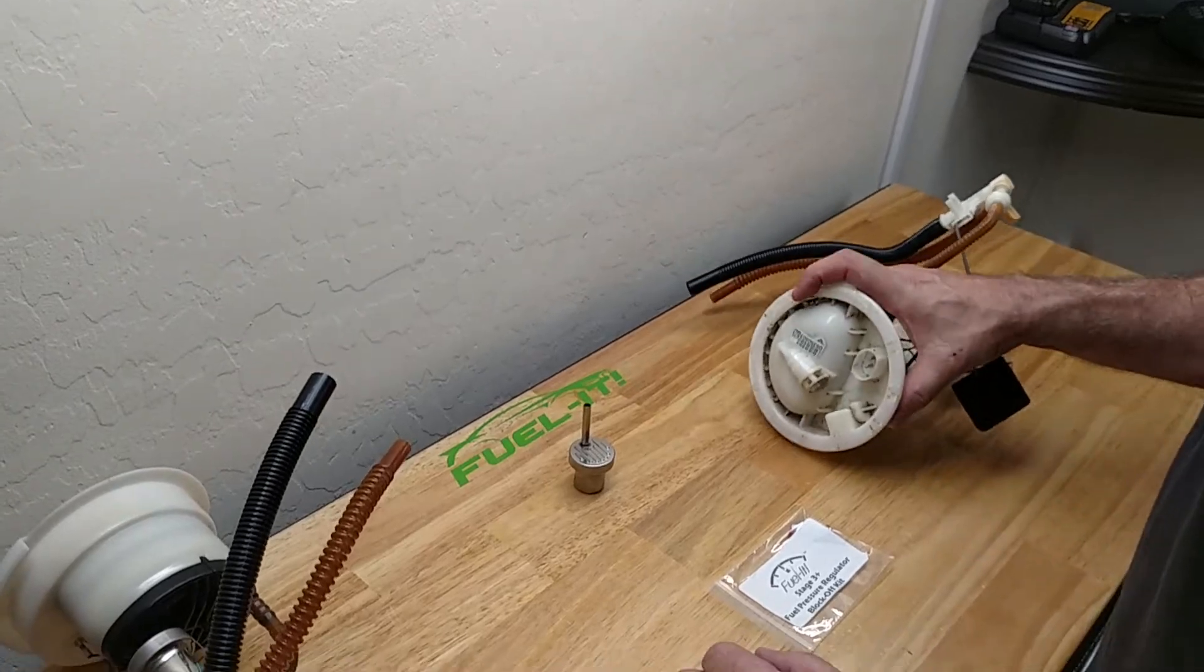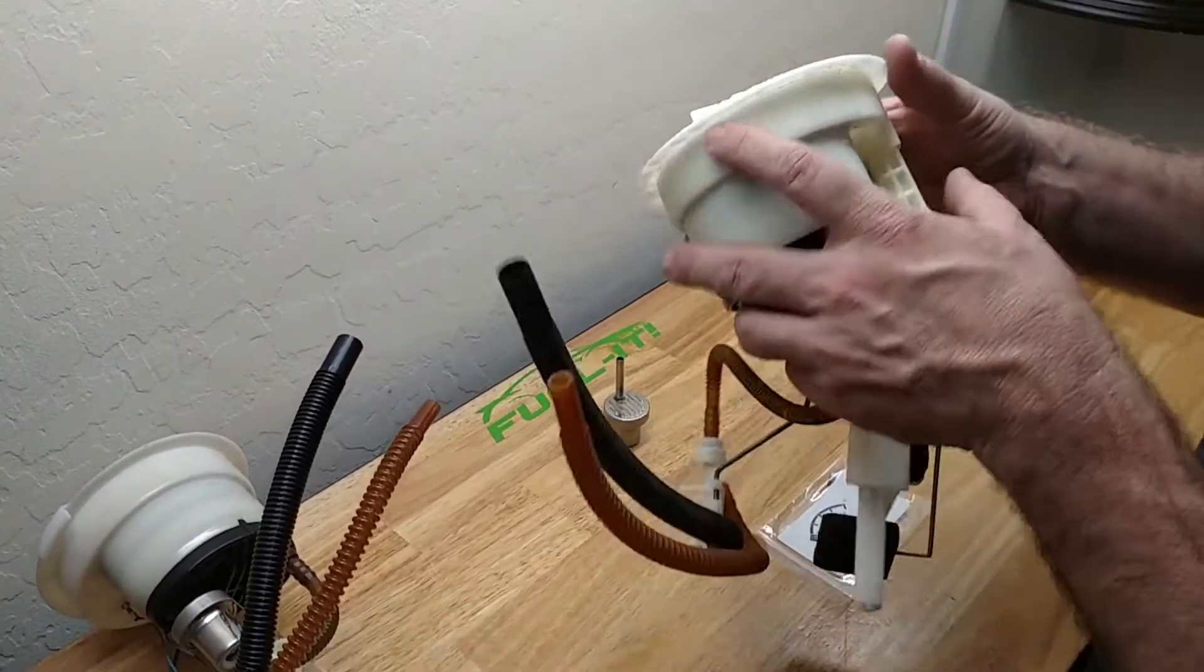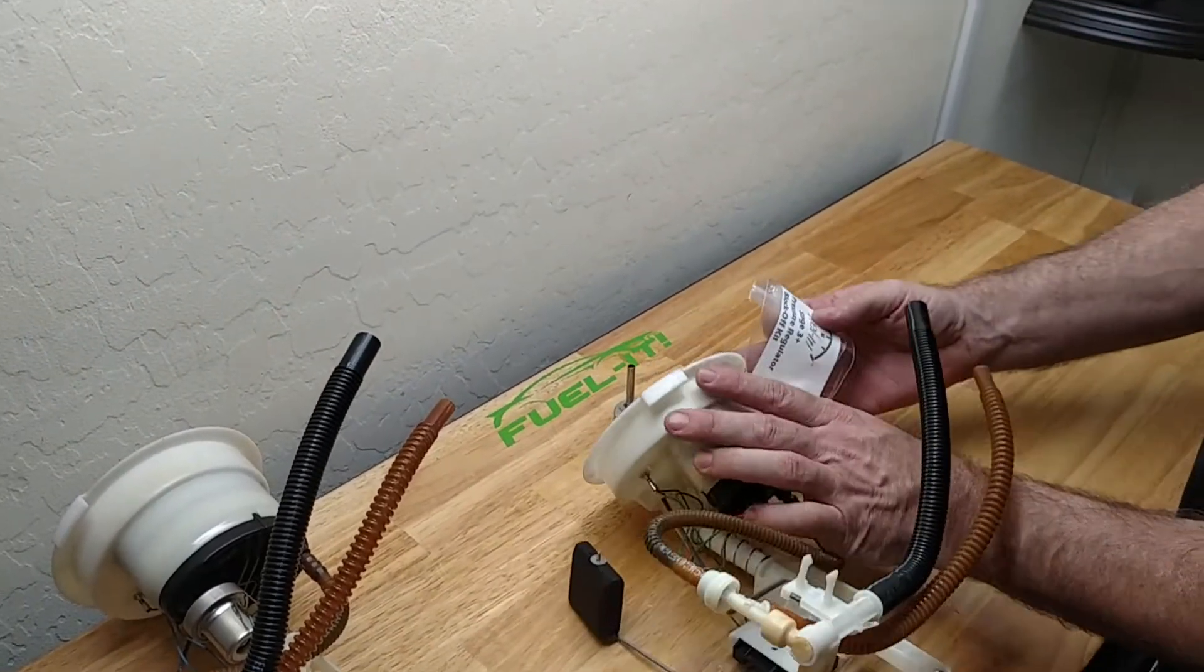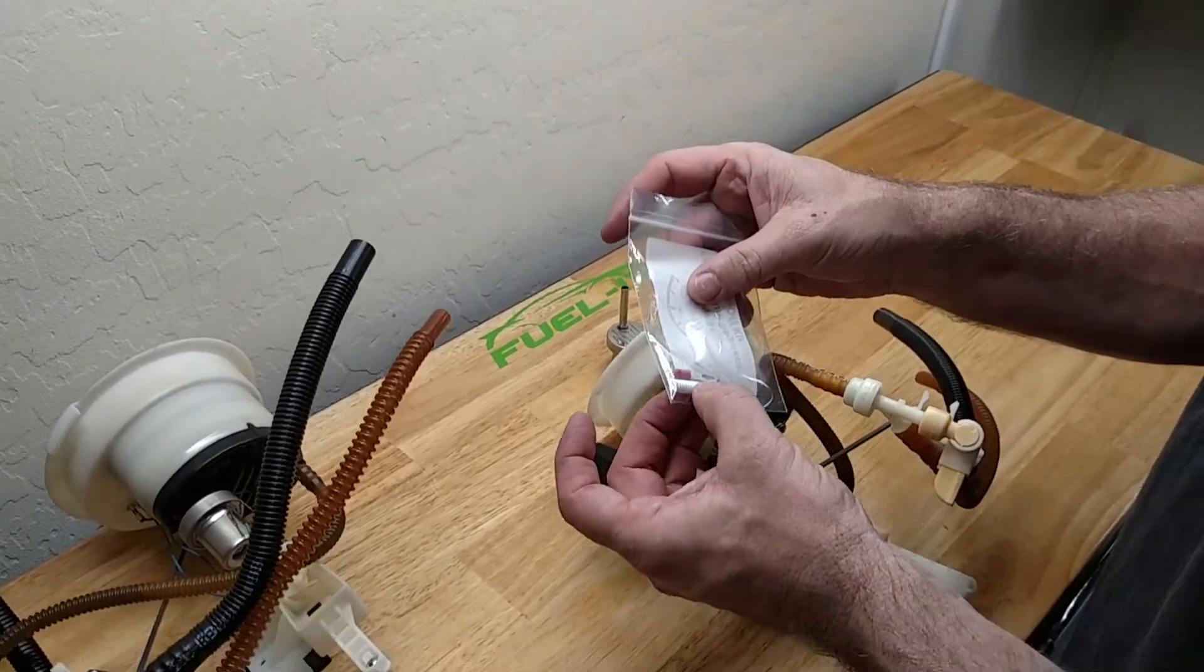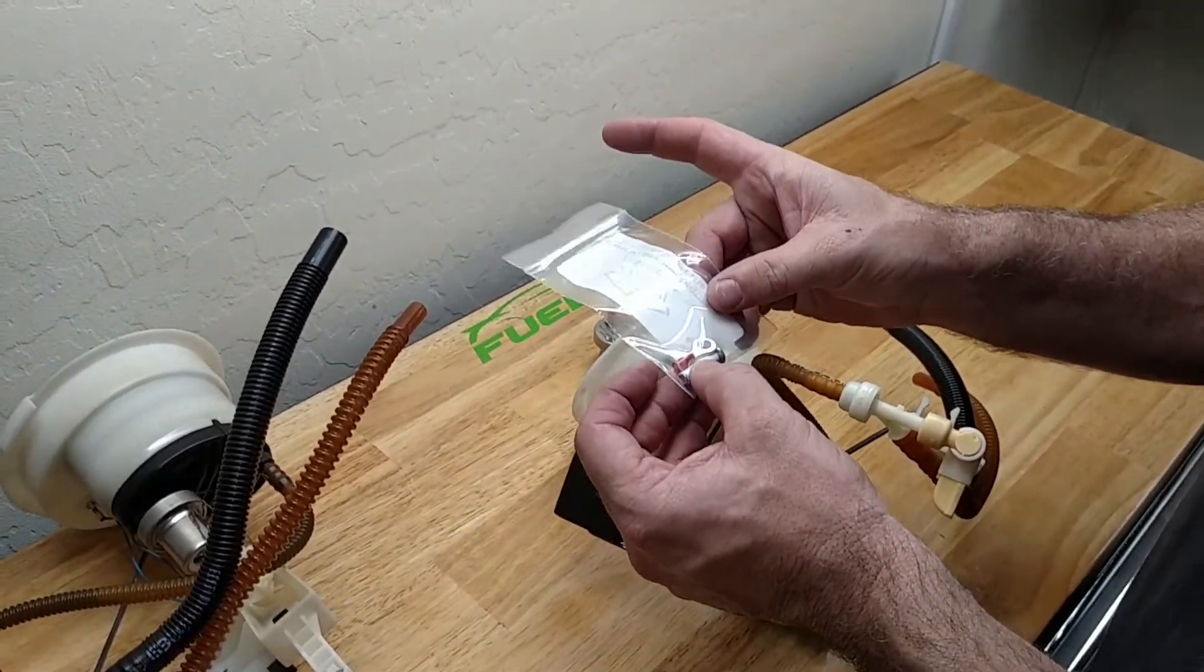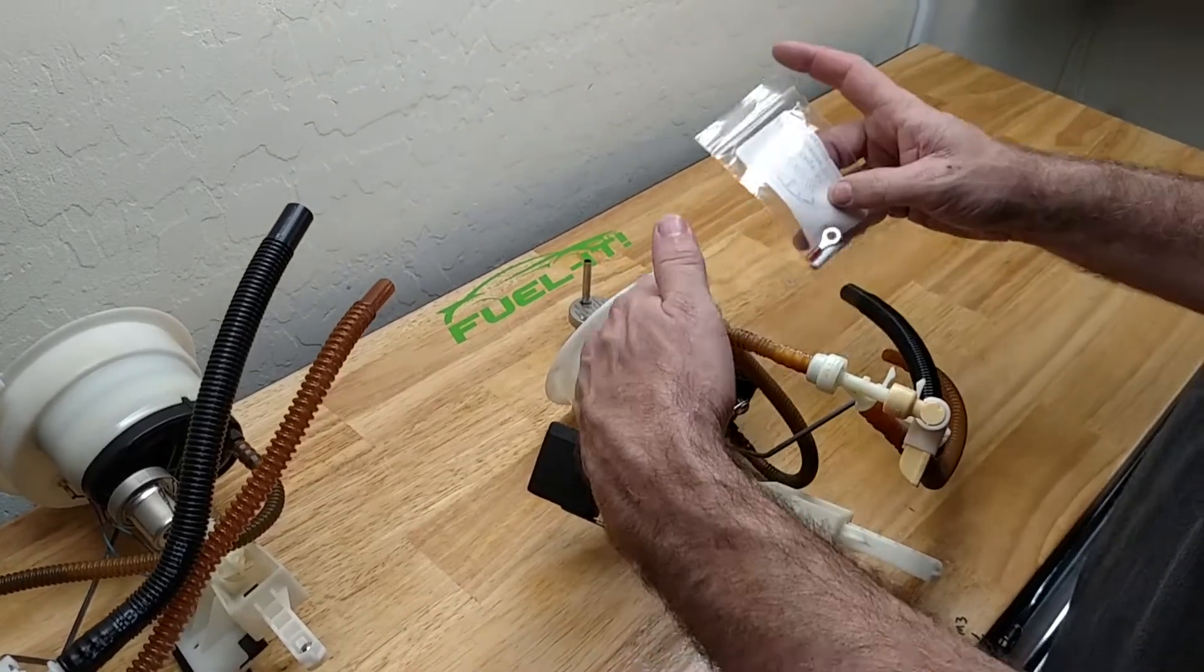Then once you've done that, you can insert the plug that is just a Teflon stainless steel bolt and insert it through the opening in the bottom of the filter assembly.